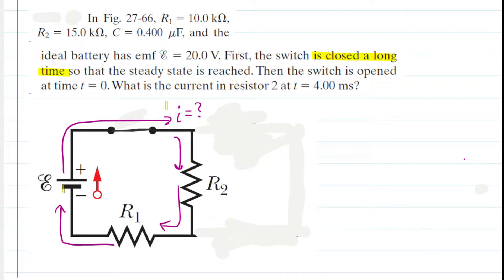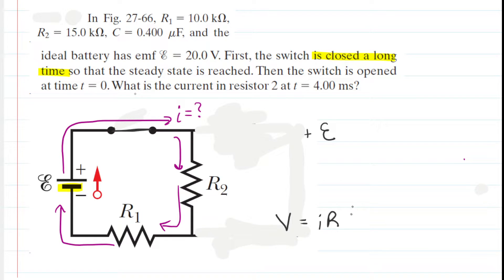The loop rule tells me I can begin anywhere within the loop. I choose to begin at the negative terminal of the battery and move clockwise until I return there, keeping track of potential changes. Beginning at the negative terminal and moving to the positive terminal is an increase in potential — the amount symbolized by E — so I have a positive E. Continuing clockwise, I encounter R2, which gives a potential drop. Ohm's law tells me the drop across a resistor equals the current times the resistance, so that's a minus I times R2.